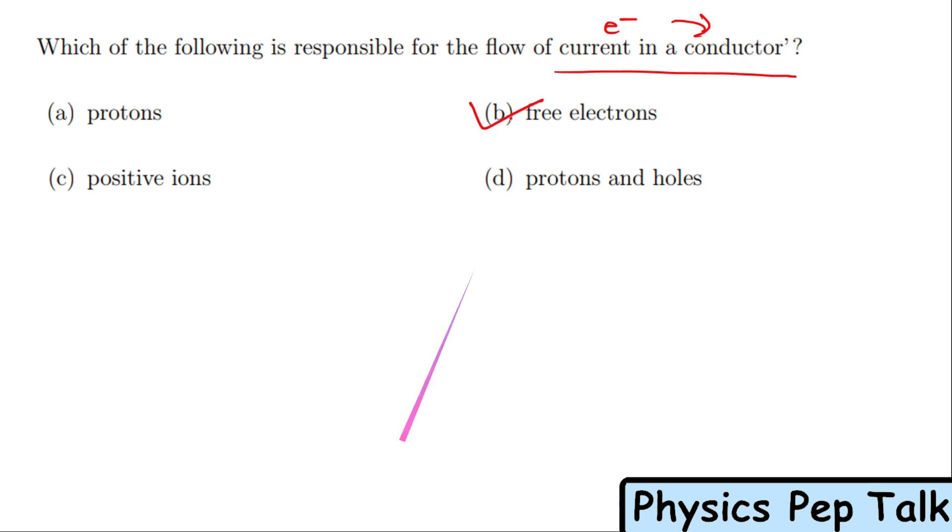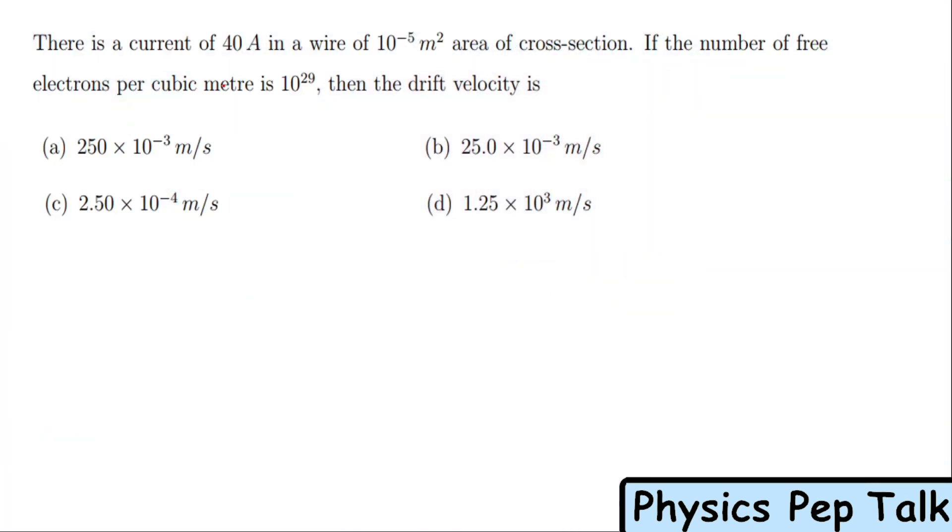Next problem: There is a current of 40 amperes in a wire of 10 × 10⁻⁵ m² area of cross-section. If the number of free electrons per cubic meter is 10²⁹, then the drift velocity is what they're asking. We'll determine the drift velocity using the relation i = nAevd.